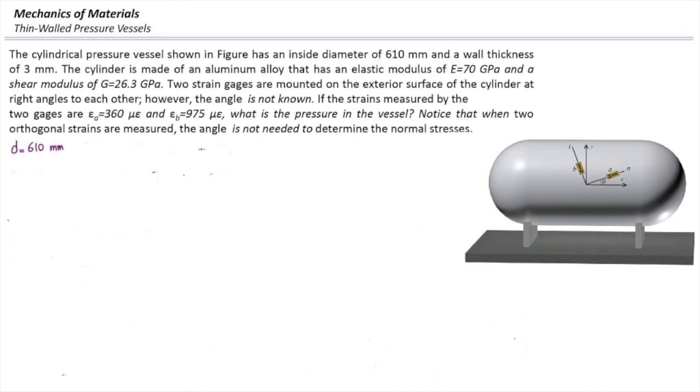The internal diameter is 610, I'm going to write down the data that we have. Radius is 305 mm, thickness is 3, modulus of elasticity and G are given. And I can determine Poisson's ratio from the relationship between three material properties. Nu would be 0.33 in this case.